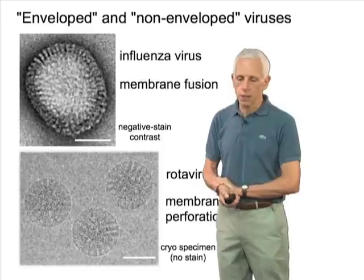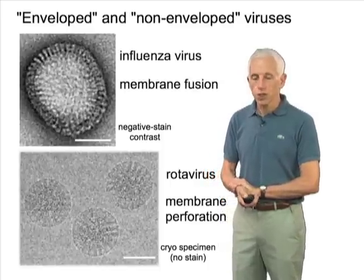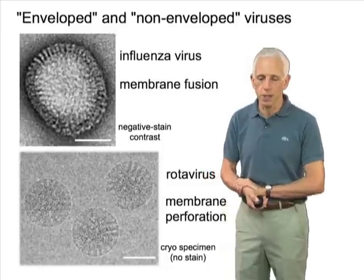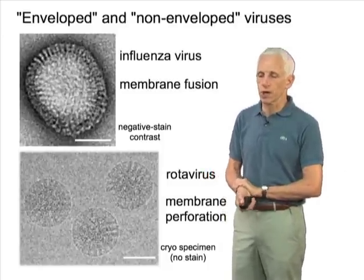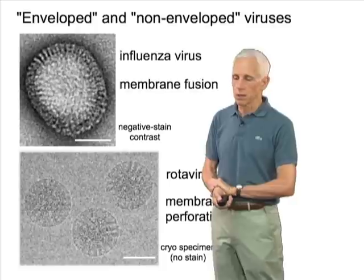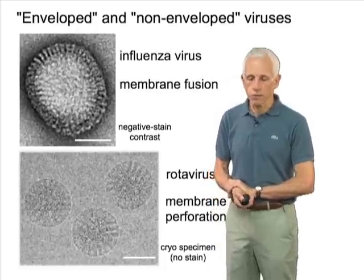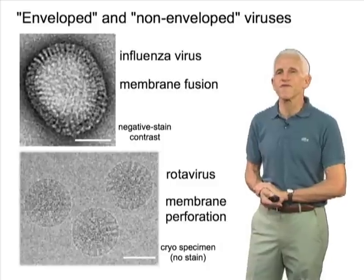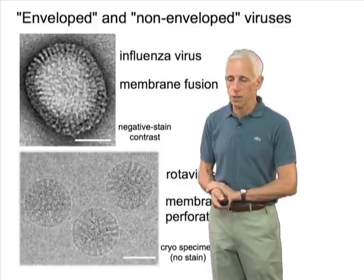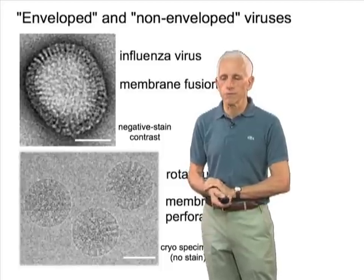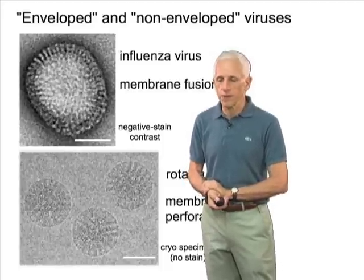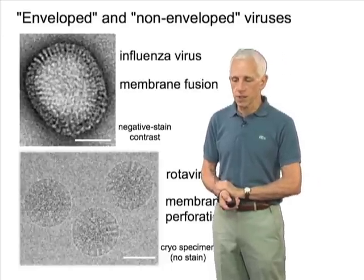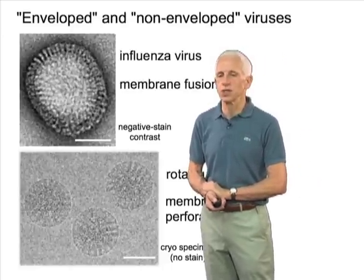Rotaviruses are the cause of childhood diarrhea. They're a virus that grows in the small intestine and is the major source of infantile dehydrating diarrhea, which is particularly serious in developing countries. There's a recent introduction of a vaccine that may ameliorate the spread of this virus, which has been responsible for as many as half a million childhood deaths each year.